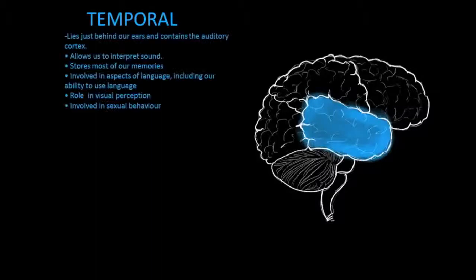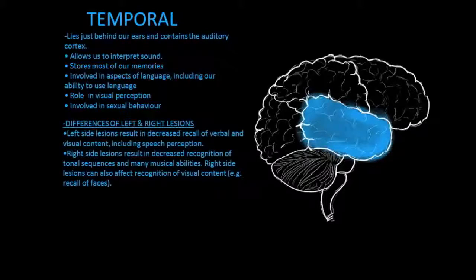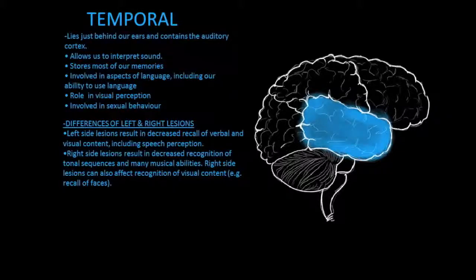The temporal lobe lies behind our ears and contains the auditory cortex. It allows us to interpret sound and stores most of our memories. It is involved in aspects of language and also has a role in visual perception and sexual behavior. Lesions to the left side of this lobe result in decreased recall of verbal and visual content, speech perception, disruption to the recognition of words, and impaired memory for verbal material.